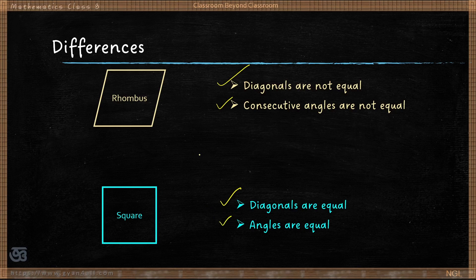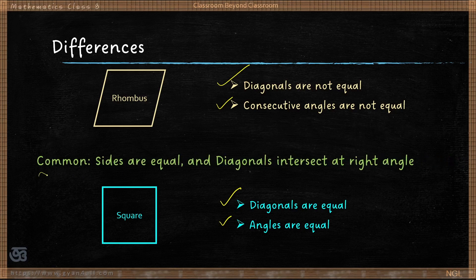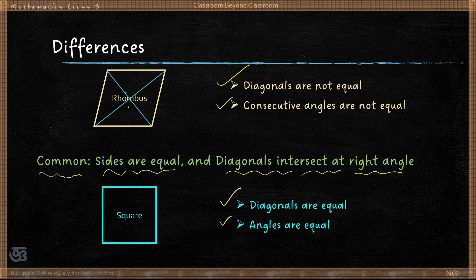You don't have to just memorize this — if you understand, you can easily remember the differences. Common properties include: all sides are equal in both a rhombus and a square, and diagonals intersect at right angles in both cases. In a rhombus both diagonals intersect at right angles, and in a square both diagonals intersect at 90 degrees. If you can visualize this, you can easily construct a rhombus or a square.